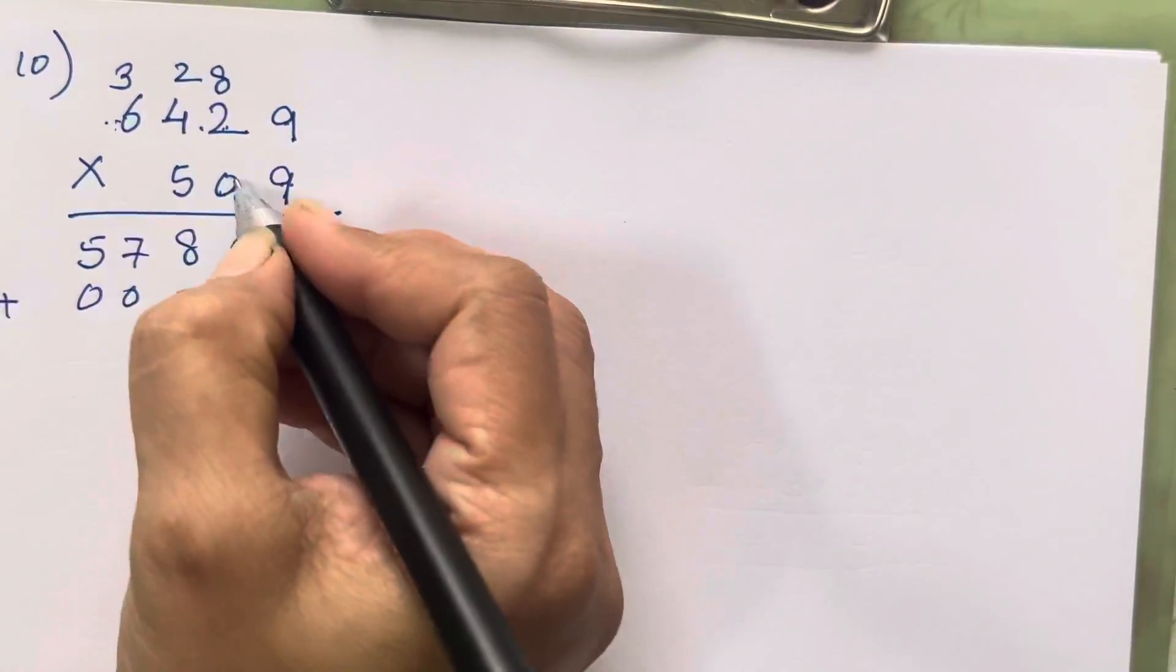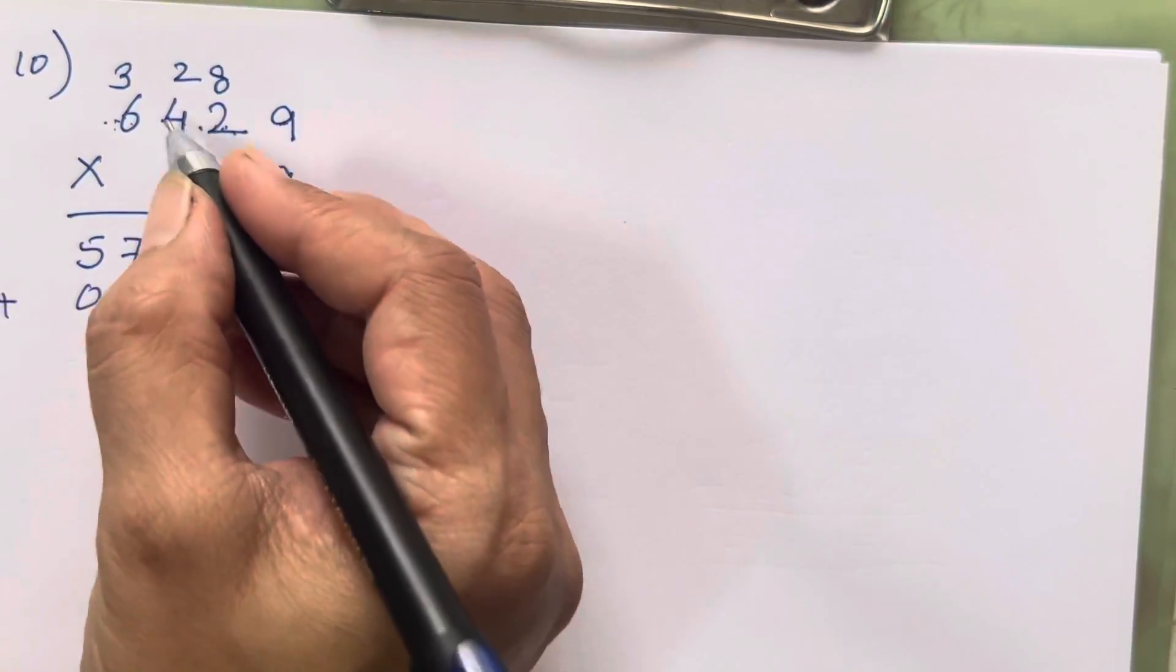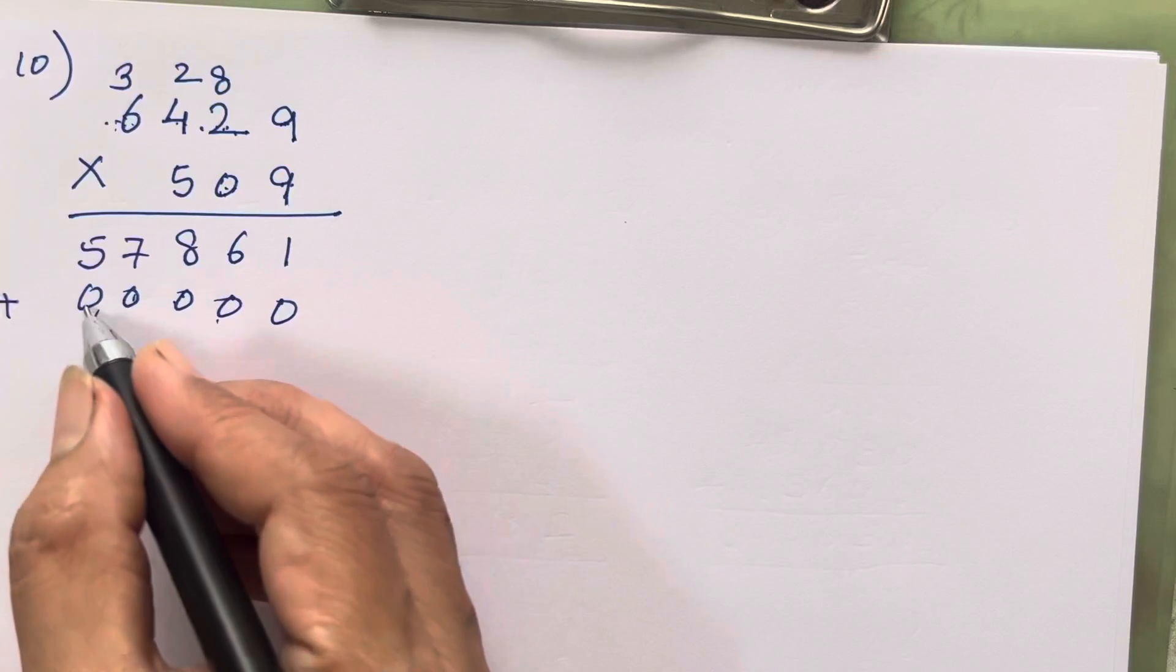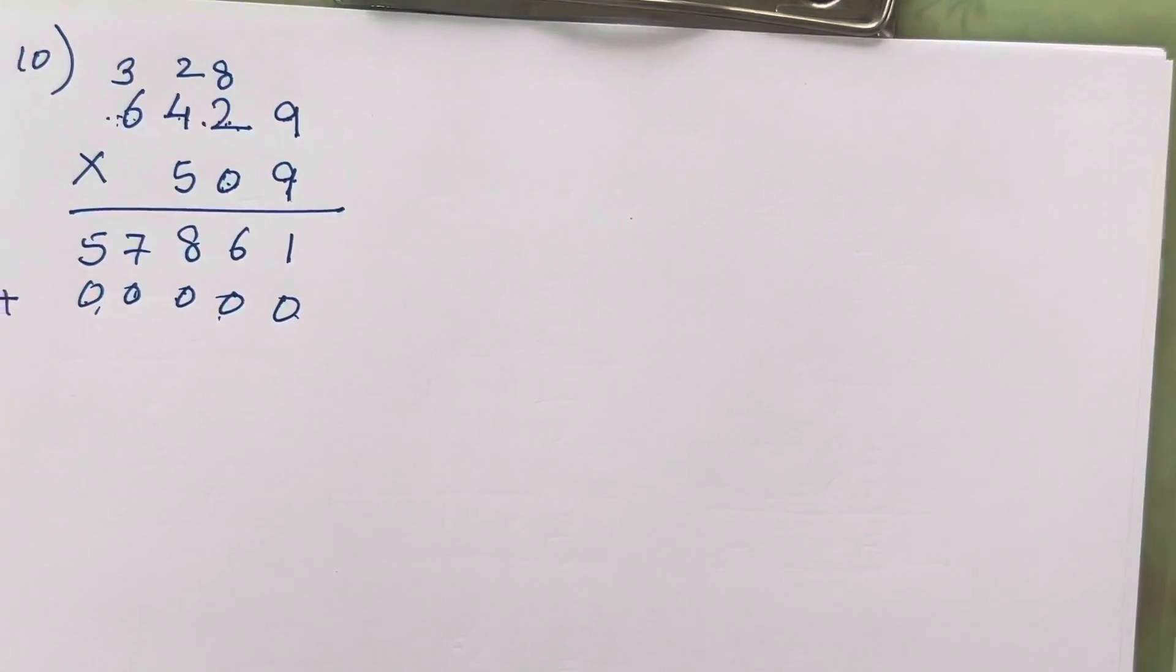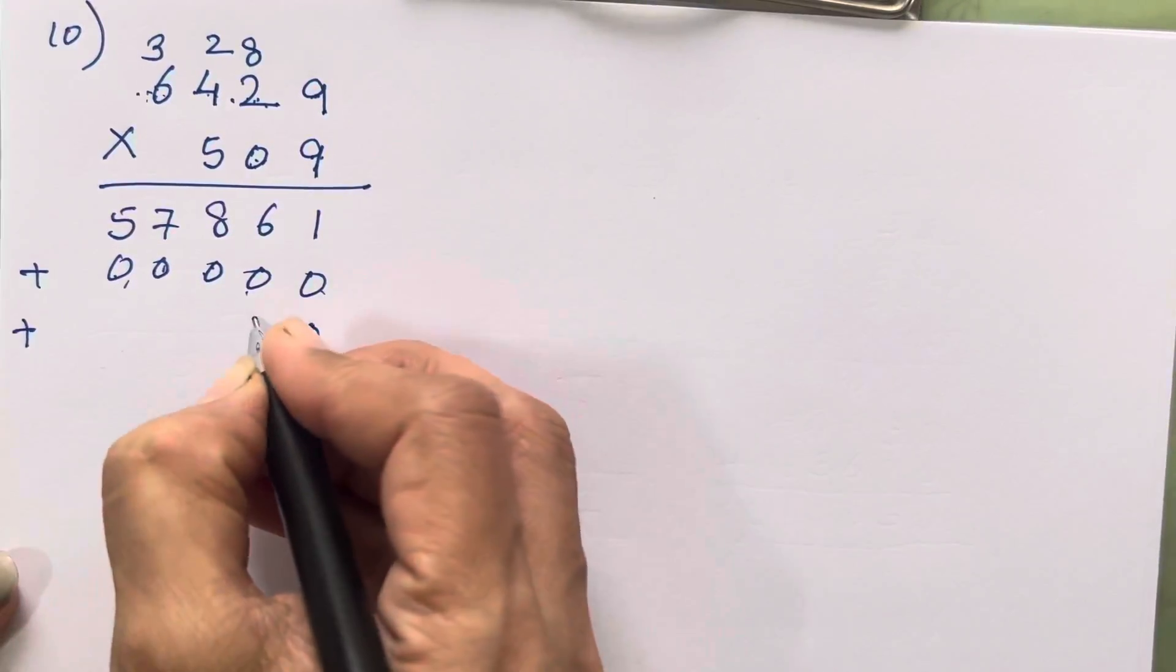Now anything multiplied with 0 is going to give you 0. So 1, 2, 3, 4 zeros I am directly putting. 0 nines are 0, 0 twos are 0, 0 fours are 0, 0 sixes are 0. 1, 2, 3, 4. And extra 0 we have always added it.